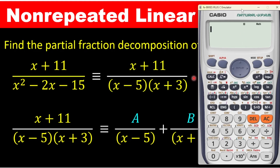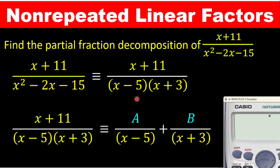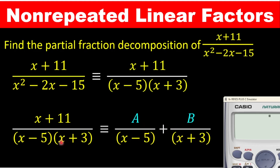Now let's solve the question using the cover-up method. A has a denominator of (x − 5) and B has a denominator of (x + 3). For the cover-up method, if you are looking for the value of A, you cover the denominator of A on the left-hand side of the identity. So if you cover (x − 5), you are solving for A. When looking for B, you cover (x + 3) instead, and that helps you get the value of B.